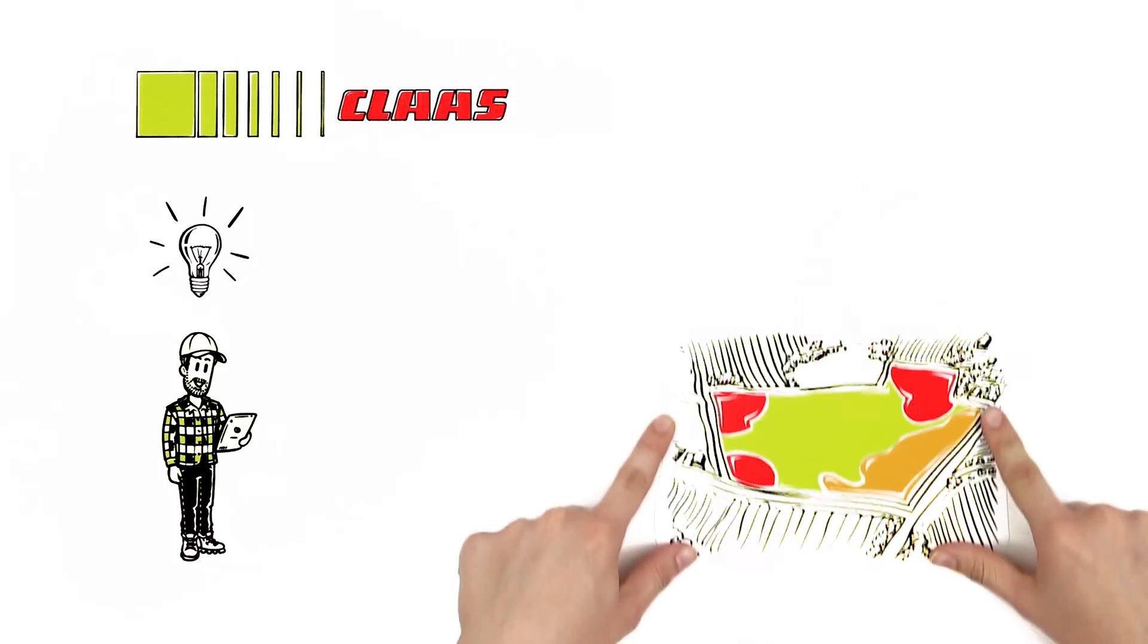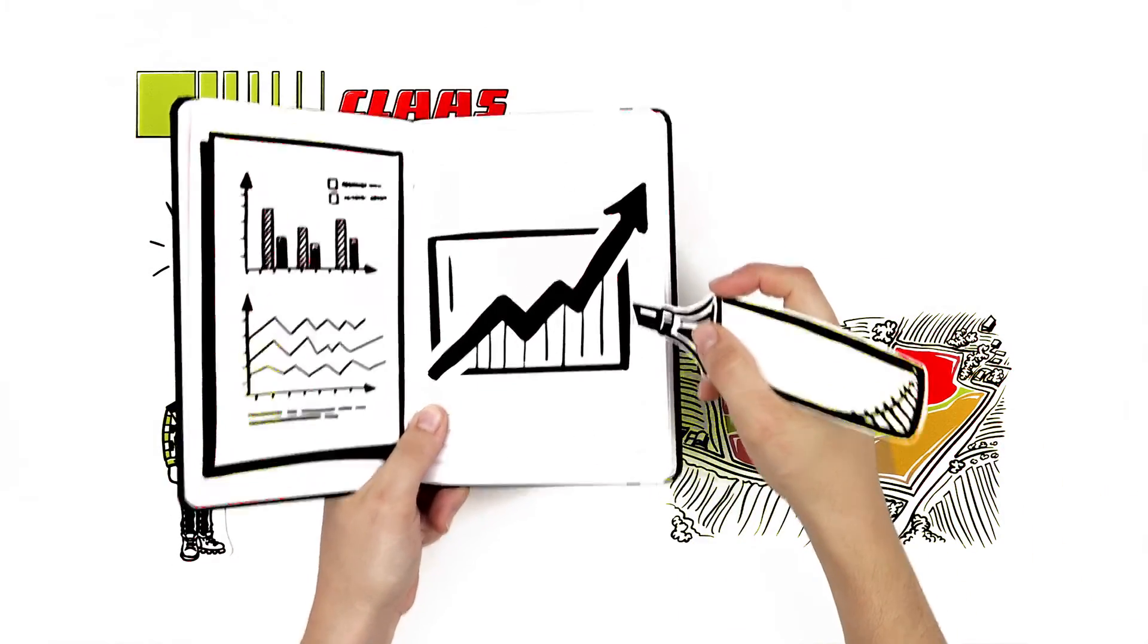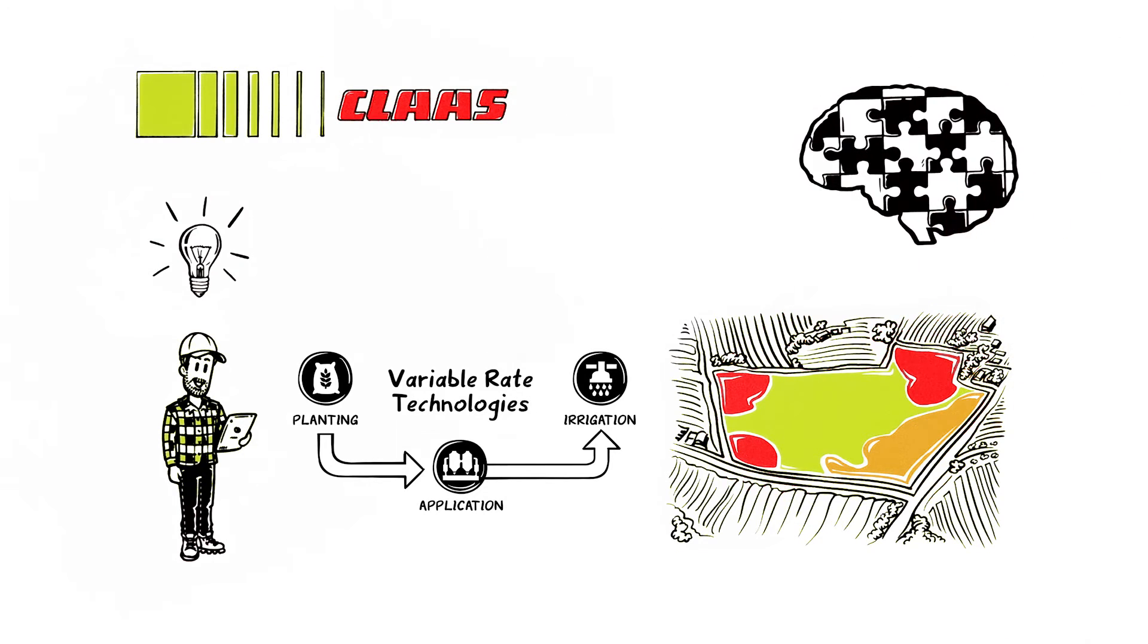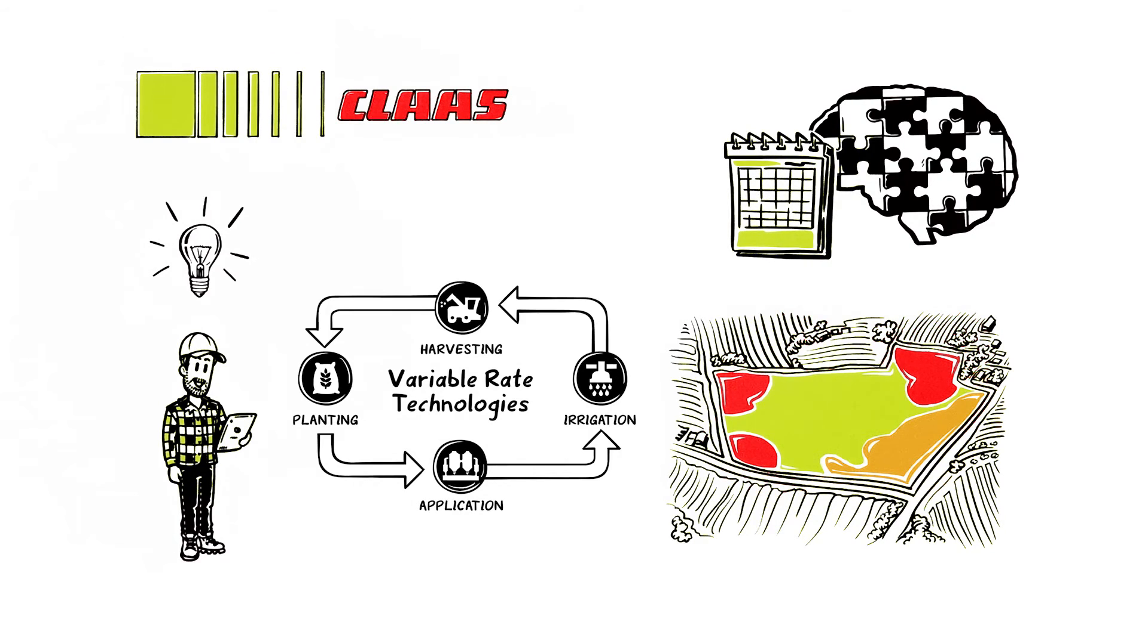Using built-in mapping and analytics features to illustrate the true impact of his variable-rate technologies, this system allows him to make smarter decisions for next year's crops. Variable-rate harvesting closes the loop on the entire process.